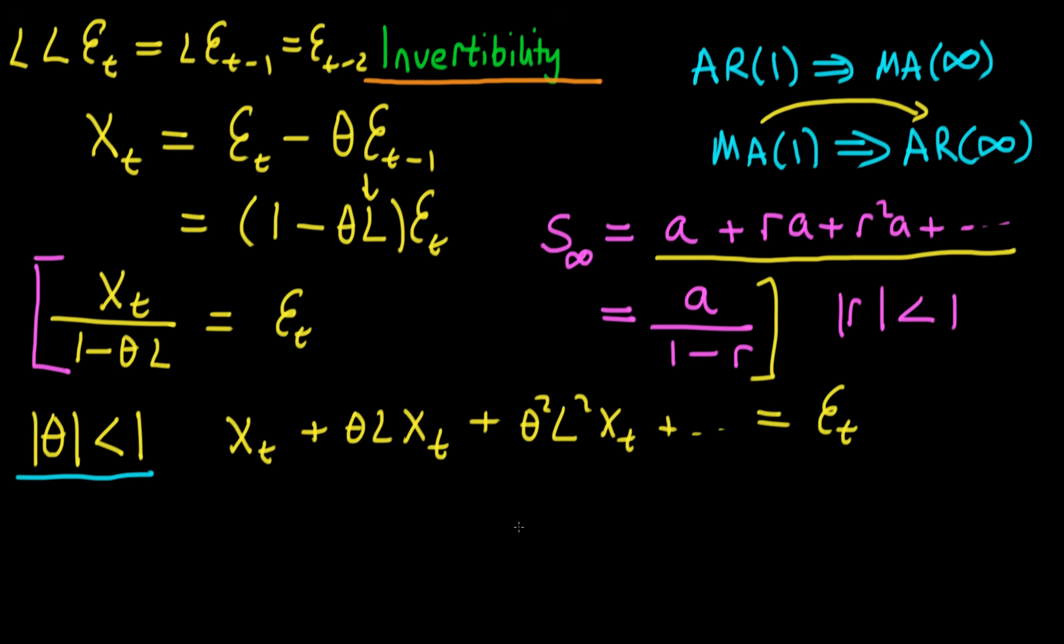And it turns out that if we are applying the lag operator to a variable we know we've already defined that this is just going to be XT minus 1. This L squared times XT is going to produce XT minus 2 etc.